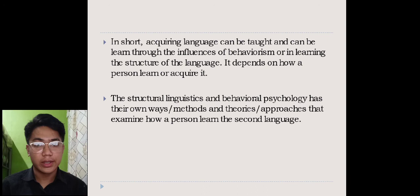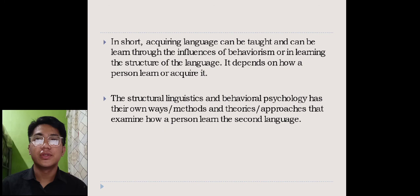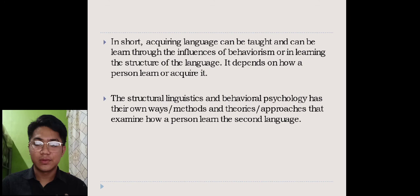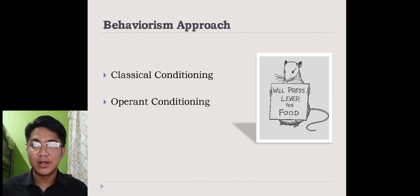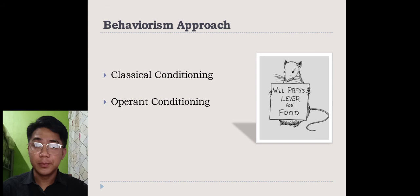In summary, acquiring language can be learned through the influences of behaviorism or through learning the structure of the language — it depends on how a person learns or acquires it. Structural linguistics and behavioral psychology each have their own methods and theoretical approaches that examine how a person learns a second language. These ideas are very common today, especially in Filipino culture, where classical and operant conditioning are used with children, and adults learn language through encounters with other people and cultures. Thank you for listening and have a great day.